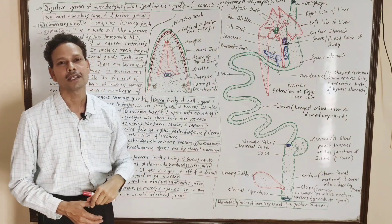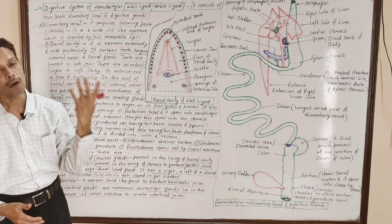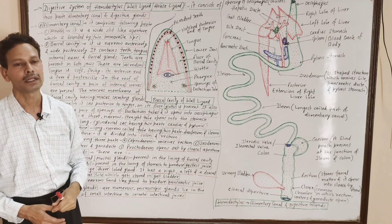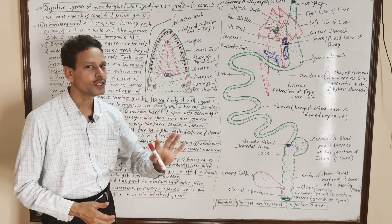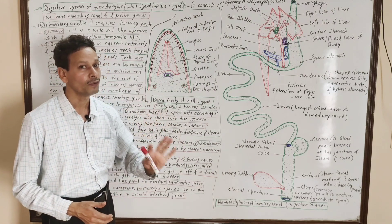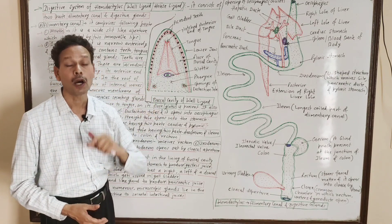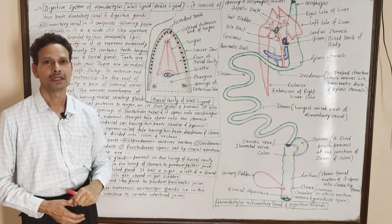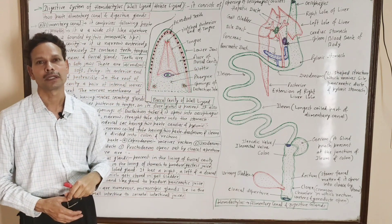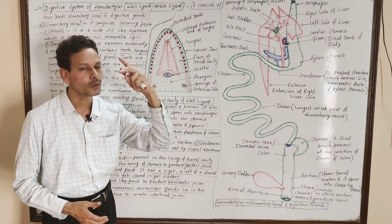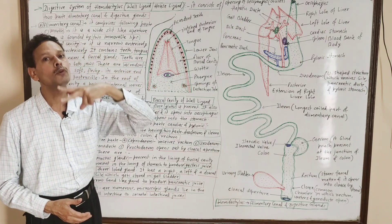The alimentary canal in the case of wall lizard Hemidactylus, the common house lizard, is complete. It is divided into the following parts. The first part is the mouth, which is a transverse slit-like aperture, and that mouth is well bounded by two immovable lips.